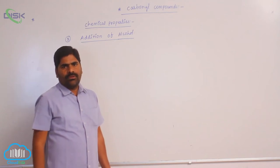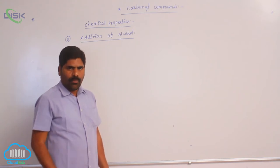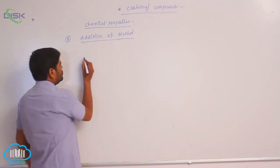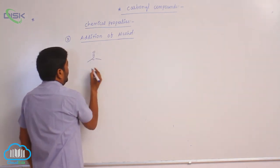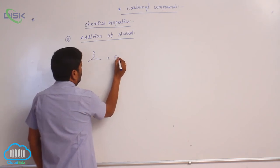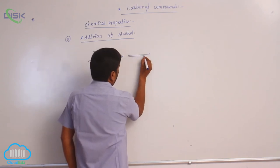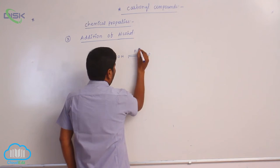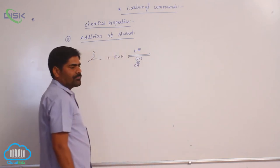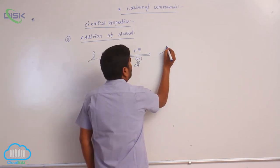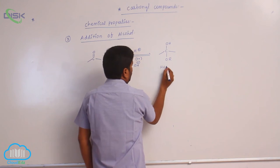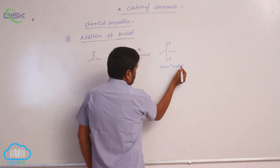We have already discussed addition of hydrogen cyanide, sodium bisulphite, and water to a carbonyl compound. Now I will discuss addition of an alcohol to a carbonyl compound. In the presence of an acid catalyst or a base catalyst, the alcohol initially reacts with the carbonyl group. The product formed here has an OH group and an OR group.